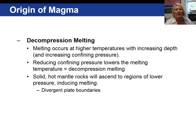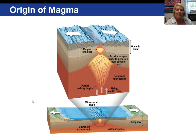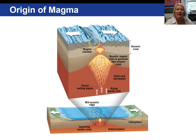One way magma originates is by decompression melting. As convection occurs in the mantle along divergent plate boundaries, mantle rock comes closer to the surface and pressure decreases, allowing bonds to break and melting to occur. Here's an image showing decompression melting where we have solid peridotite down in the mantle, convection occurring, and as a result pressure lowers and that rock melts. That rock is now basaltic in composition and may come up to the ocean crust and ooze out, forming new ocean crust.